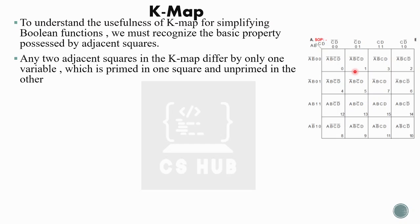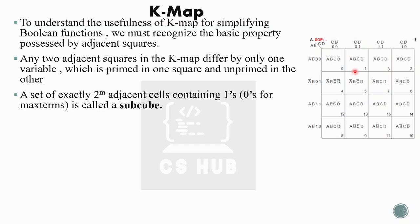This property is used for simplifying Boolean expressions. The next term is 'subcube.' A subcube means a set of exactly 2^m adjacent cells containing ones or zeros. We know how to represent POS and SOP forms using Kmap. For SOP, we mark ones in cells representing the SOP expressions; for POS, we mark zeros for the corresponding POS expression. Those marked adjacent cells are known as subcubes.